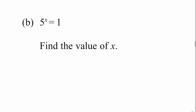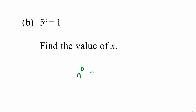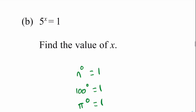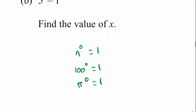Part b — we need to find the value of x. We've got 5 to the power of x is equal to 1. This is one of the rules we need to learn for indices: anything to the power of zero is always equal to 1. For example, 100 to the power of zero equals 1, or pi to the power of zero equals 1. So anything to the power of zero equals one, and therefore x is equal to zero.